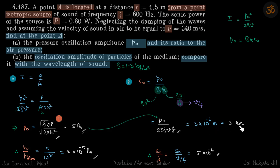We need its ratio with the wavelength, so that will be s₀/λ. Lambda is again v/f, where v and f are given. If you put the values, that comes to be 5 × 10⁻⁶. Again, you can see the actual displacement of the particles is very small compared to the wavelength of the wave itself, and the pressure amplitude is minuscule compared to the atmospheric pressure.